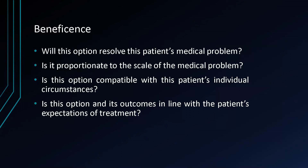In doing so, they should consider the following aspects: Will this option resolve this patient's medical problem? Is it proportionate to the scale of the medical problem? Is this option compatible with this patient's individual circumstances, and is this option and its outcomes in line with the patient's expectations of treatment? When ranking treatments, it is crucial to bear the patient's expectations in mind. When doing good, this doesn't just refer to what's medically good for the patient, but also what is acceptable to the person being treated. Therefore, beneficence is important as it ensures that healthcare professionals consider individual circumstances and remember that what is good for one patient may not necessarily be great for another.